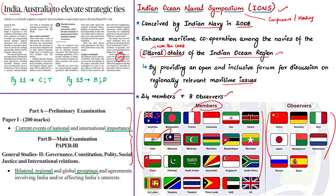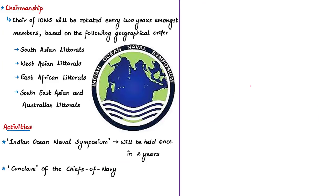The chair of Indian Ocean Naval Symposium is rotated every two years amongst the members based on mutual consultation. The chair rotates in the following geographical order: they have split the Indian Ocean region into four geographically distinct areas — the South Asian area, the West Asian littoral, the East African littoral, and the Southeast Asian and Australian littoral.